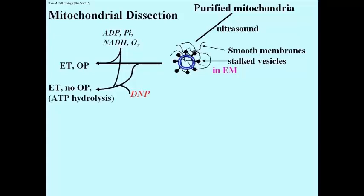Also just like intact mitochondria, if dinitrophenol were added to the busted up mitochondria, they would continue electron transport in the presence of DNP, but could not make ATP. Far from it, the vesicles would hydrolyze ATP.